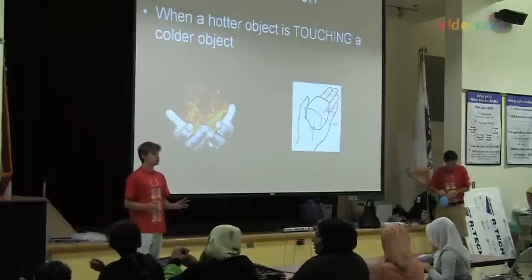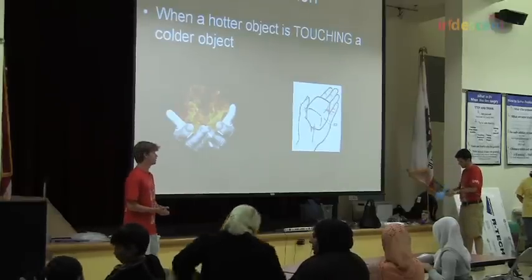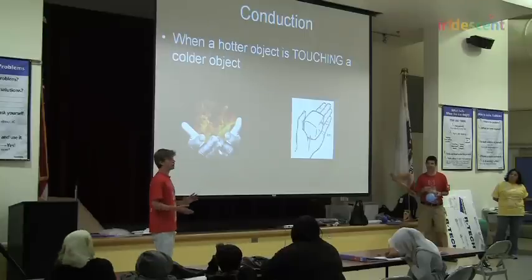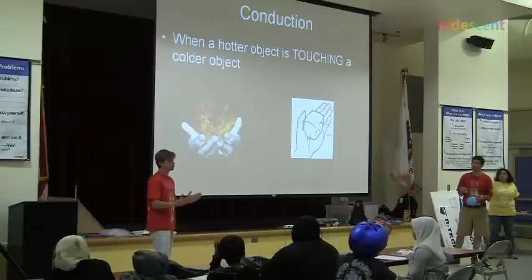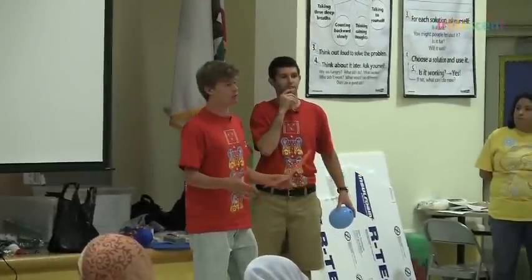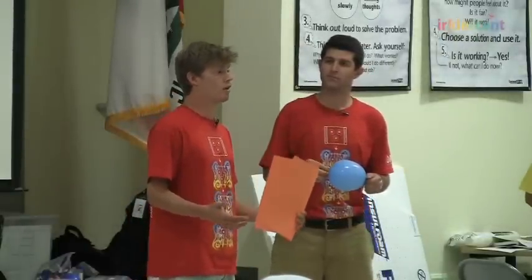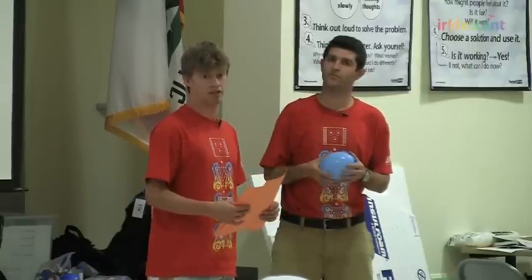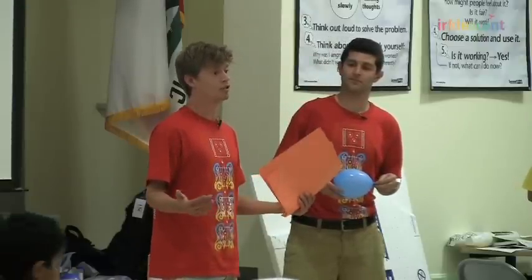Today we're going to learn about two other ways that heat can move. One is conduction, and two is radiation. Conduction is when heat travels from one object to another or through an object by direct contact. When a hot object is touching a colder object, heat will move. We're going to do a little demonstration to see how easily heat moves through an object - this is called thermal conductivity. The easier it is to move heat through an object, the higher the object's thermal conductivity. When an object has a lot of molecules or density, we're going to show how density is related to how heat moves.